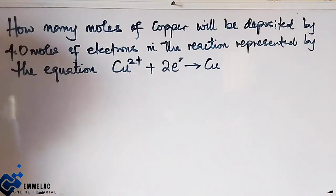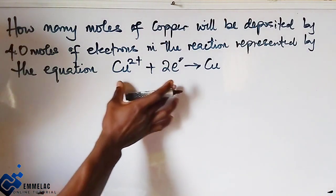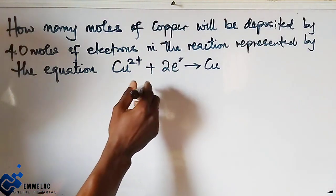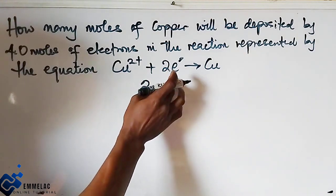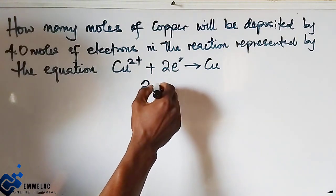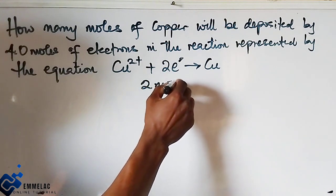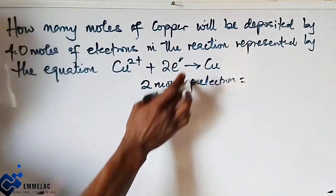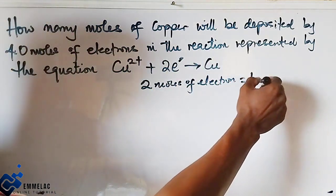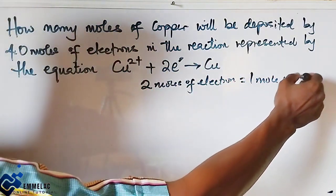Now let us know that from here we have that two electrons here was given out. So two electrons, two moles of electron give one mole of copper.